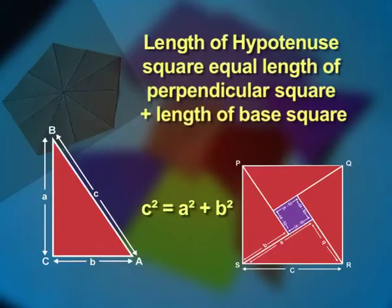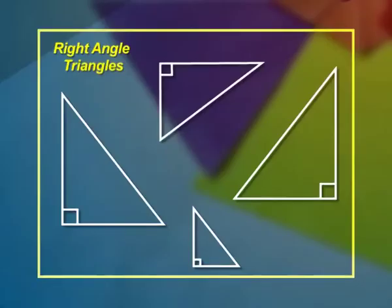We have found that the length of the hypotenuse squared equals the length of the perpendicular squared plus the length of the base squared. Students, you can verify this theorem by cutting different replicas of right angle triangles of any convenient size and you will easily get the same result.